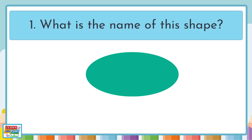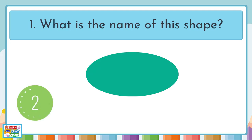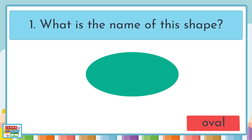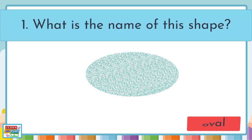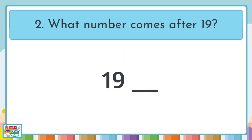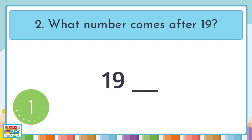Question 1. What is the name of this shape? It's an oval. Question 2. What number comes after 19? 20.